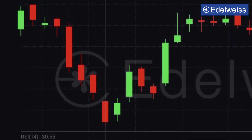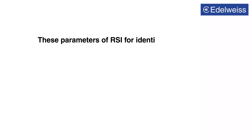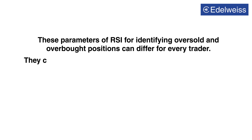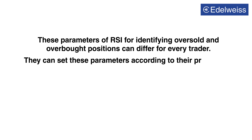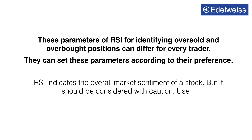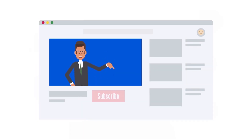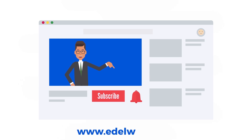This level might be considered as a buy signal. These parameters of RSI for identifying oversold or overbought positions can differ for every trader — they can set these parameters according to their preference. RSI indicates the overall market sentiment of a stock, but it should be considered with caution. Use it with other chart patterns, indicators, and overall context for double confirmation of any trend. Thank you.